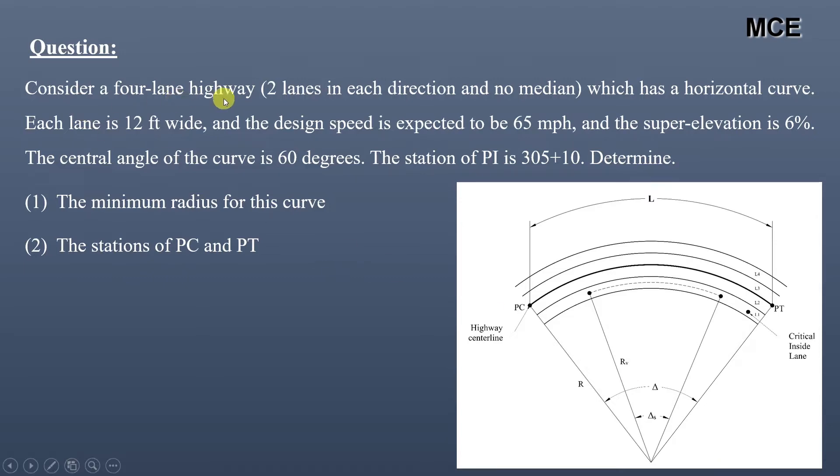The question states: Consider a four-lane highway with two lanes in each direction and no median, which has a horizontal curve. Each lane is 12 feet wide, and the design speed is expected to be 65 miles per hour.